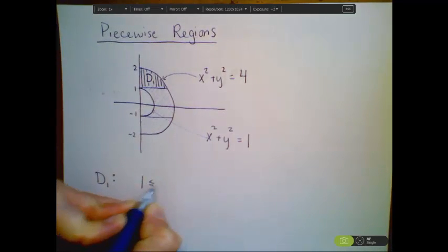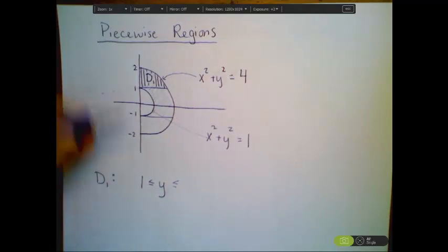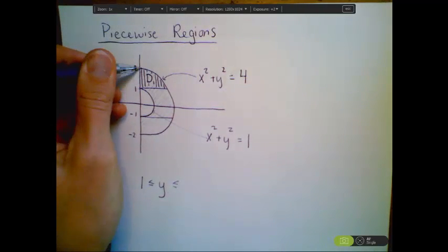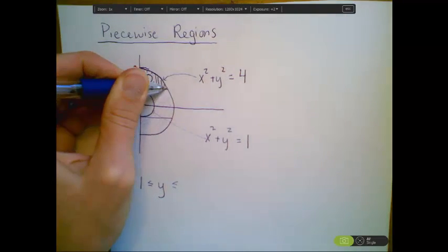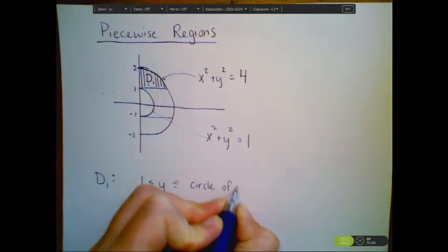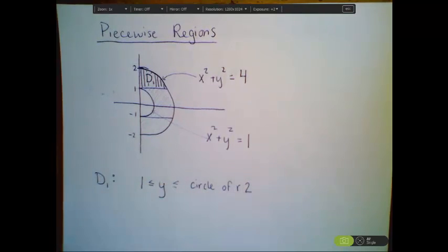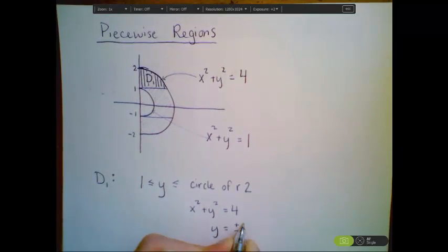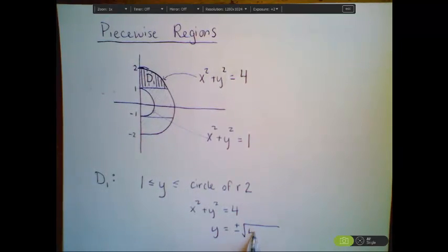So 1 is less than or equal to y. And the top bound is up here along this part of the circle of radius 2. And what is the equation of the circle of radius 2 in terms of y? We know it's given by the equation x squared plus y squared equals 4. But I need to solve this for y. That gives me y equals plus or minus square root of 4 minus x squared.